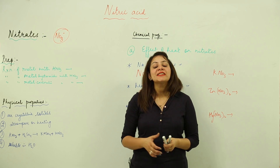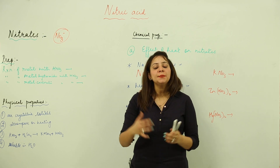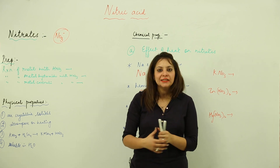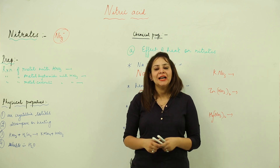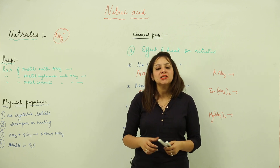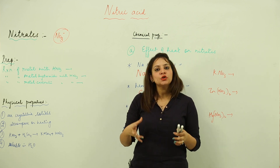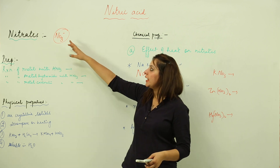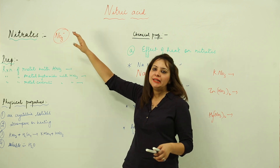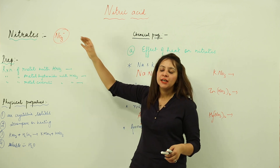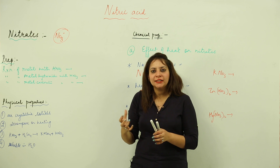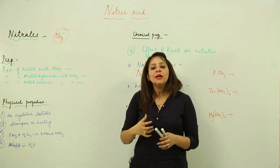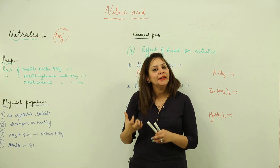We are going to start with the subtopic of nitric acid — that is, the nitrates. Nitrate is a radical with the formula NO3 negative. It is present in nitric acid and in many metal nitrate compounds.